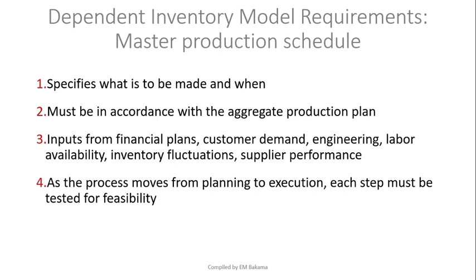The Master Production Schedule specifies what is to be made and when, in accordance with aggregate planning. Inputs come from finance, customer demand, engineering, and labor availability. In essence, the MPS tells you that to manufacture a product — say 50 units of Product A — you'll need a specific amount of material, at a specific time, and in a specific quantity. We'll do more exercises on this in upcoming videos.